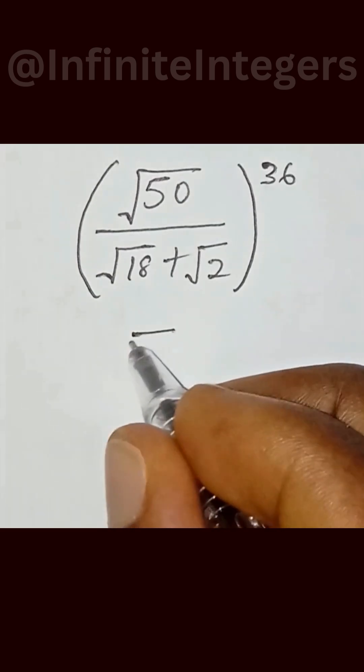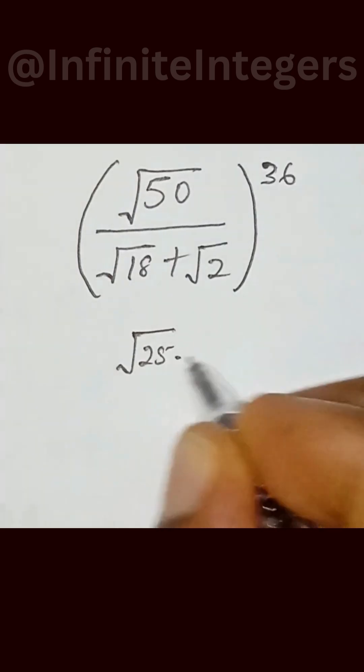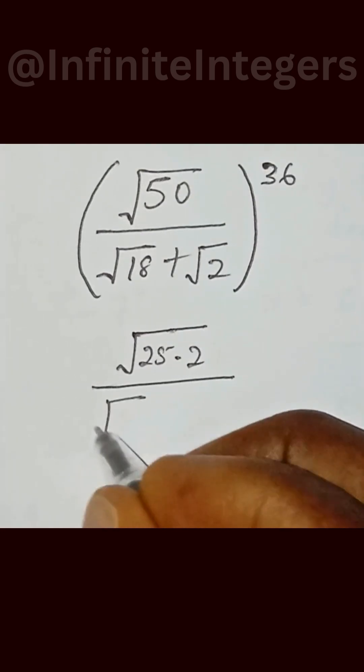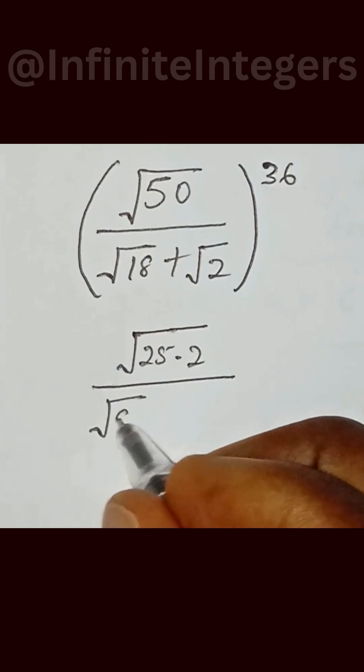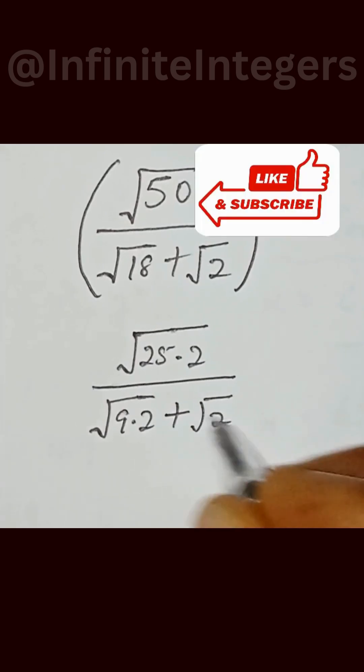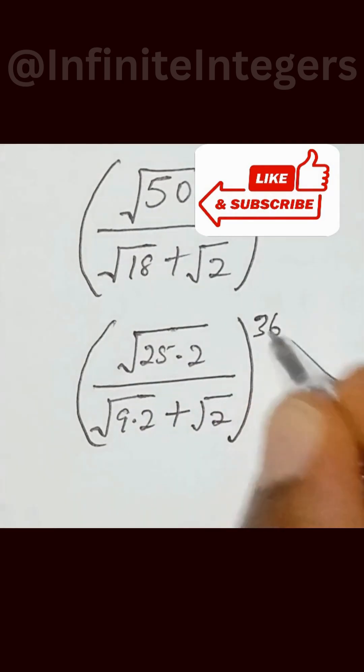We have square root of 50 is simplified as square root of 25 multiplied by 2 over square root of 18 is simplified as square root of 9 multiplied by 2 plus square root of 2, all into bracket to the power of 36.